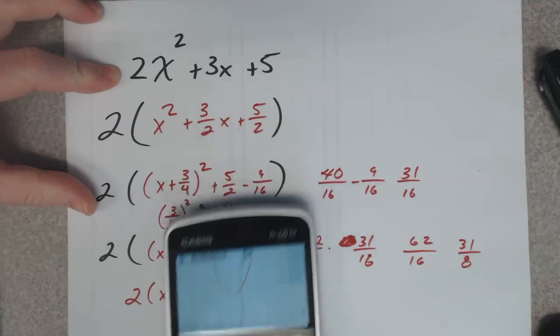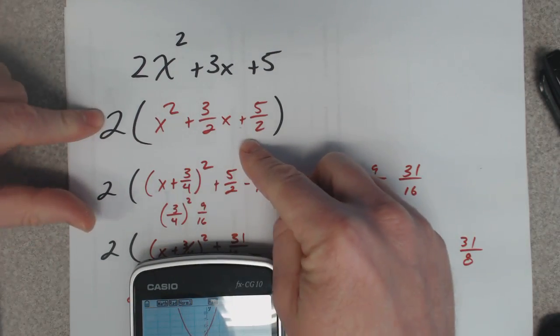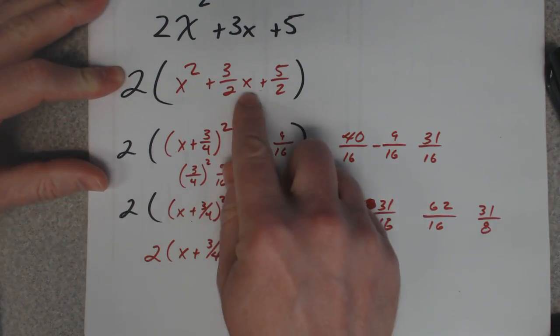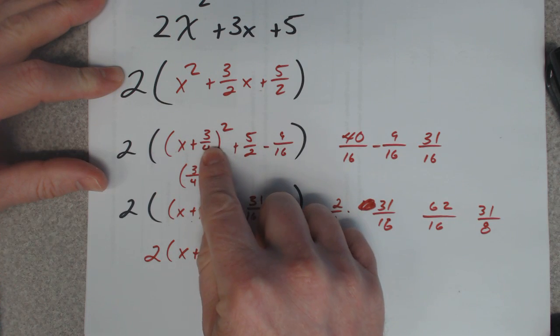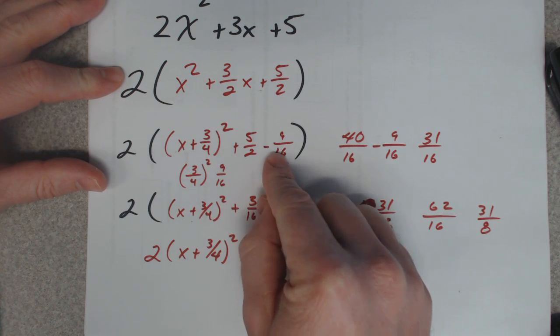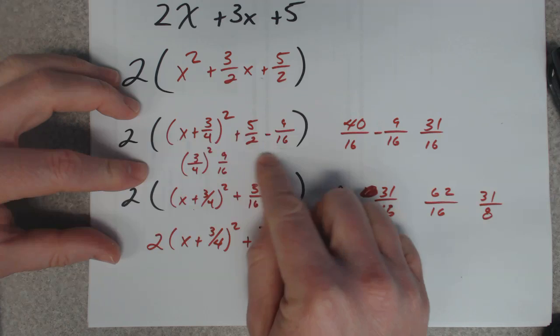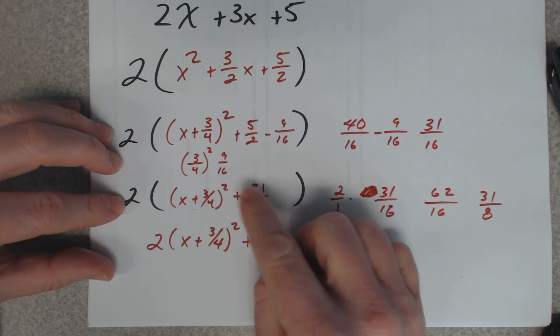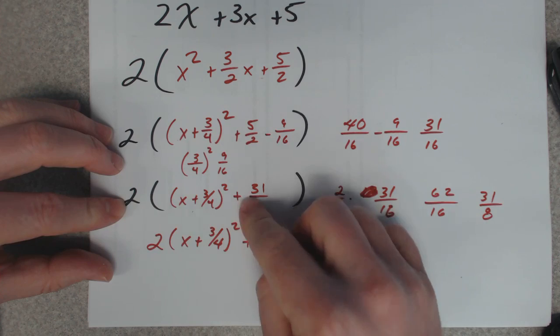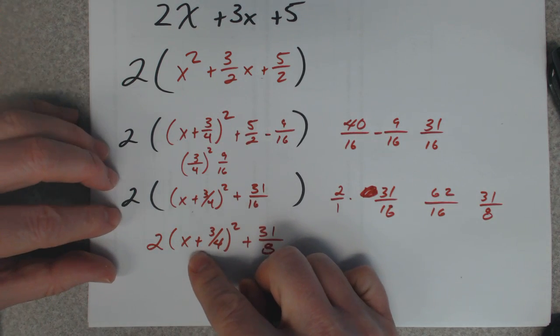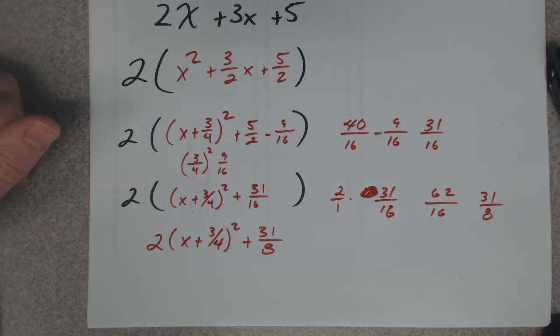So that's how you do it if you have a number in front. We just divide everything by that number or factor it out, do the same thing we usually do – taking half this value, then we square it and subtract it over here. Then we calculate that number and distribute the 2. Whatever this outside number is, you distribute it to both of them. Easy peasy.